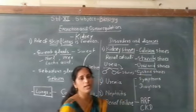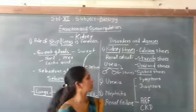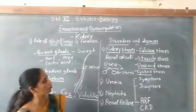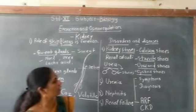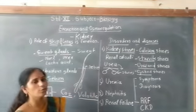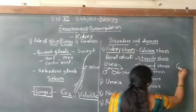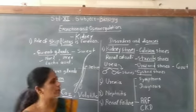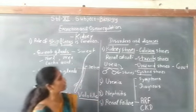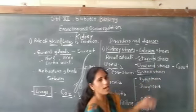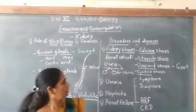Uric acid stones: although we are primarily ureotelic and excrete urea, uric acid is also formed within the body as a metabolic byproduct, especially from high protein diet intake. Uric acid formed in the liver can accumulate at joint regions, causing joint pain known as gout disease. If uric acid accumulates within the kidney or ureter, it forms uric acid stones.